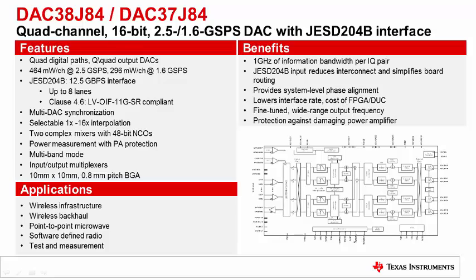The DAC38J84 is a 4 channel, 16-bit, 2.5 gigasample per second DAC. It is capable of taking in a signal with 1 gigasample per second of complex bandwidth per IQ pair, with a sample rate of 1.25 gigasamples per second, or 500 megahertz if four distinct unique channels are used. It uses the JESD204B data converter interface, which simplifies the digital interface between the FPGA and the DAC. This DAC provides excellent noise and harmonic distortion performance, perfect for use as a signal generator. It also has the ability to generate onboard sine waves with the internal NCO mixer, allowing signal generation without the need of an external processor and can be used as a simple DDS for generating sine waves.